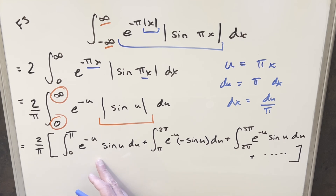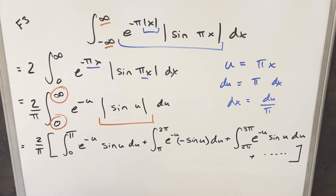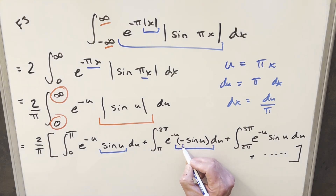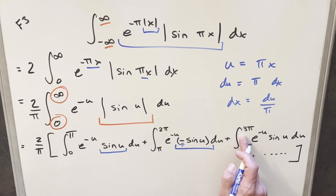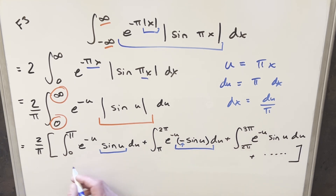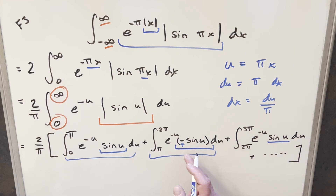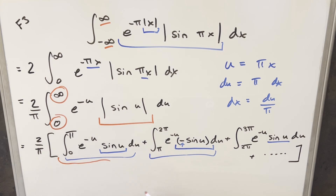Doing it this way, we can drop the absolute value. On zero to π (quadrants 1 and 2), sine is always positive, so we just drop the absolute value. On π to 2π (quadrants 3 and 4), sine is always negative, so we drop the absolute value but introduce a negative sine. On 2π to 3π it's quadrants 1 and 2 again, so we just drop the absolute value. On 3π to 4π it's the same as the π to 2π case, and this pattern continues forever.